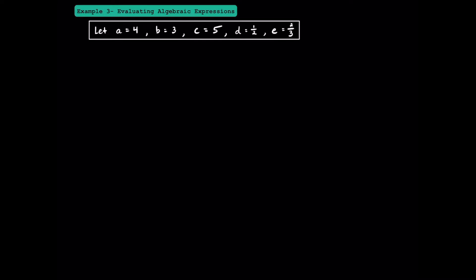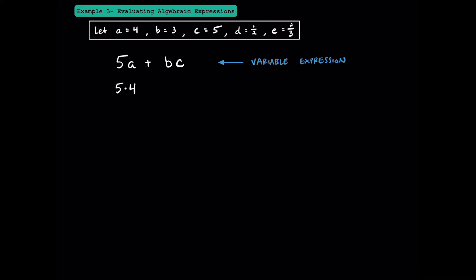In example 3, we're going to try evaluating some algebraic expressions. In each expression in this example, A equals 4, B equals 3, C equals 5, D equals one half, and E equals two thirds. Let's start with the variable expression 5A plus BC. Since we know the values of A, B, and C, we can substitute them in to create a numerical expression. A is equal to 4, so we write 5 times 4. Remember, 5A just means 5 times A. Then we add the product of B and C — B is 3 and C is 5, so we have 3 times 5.